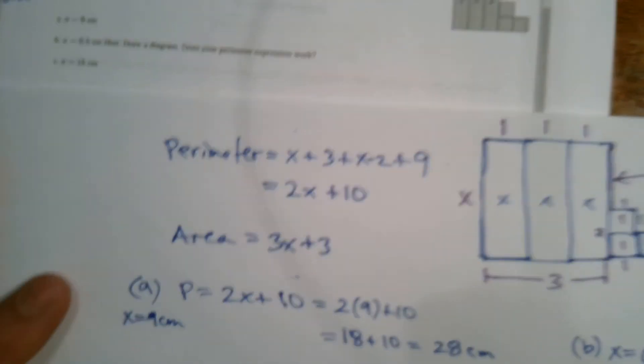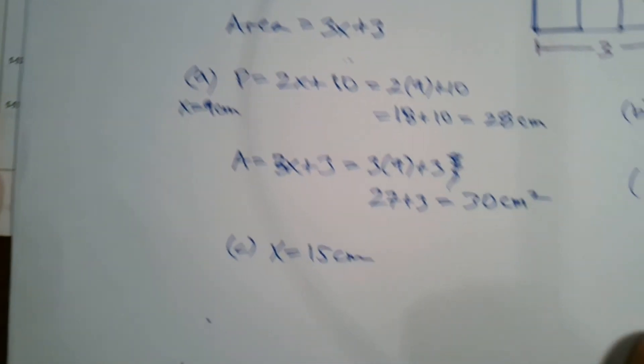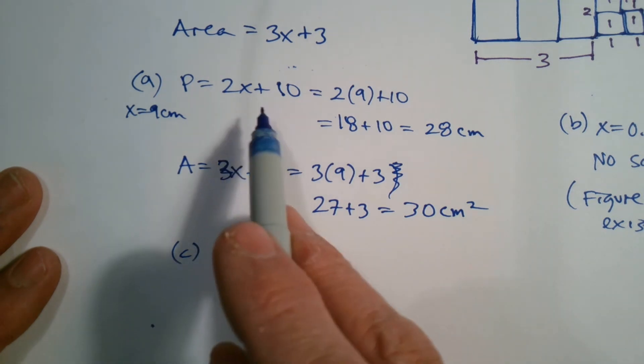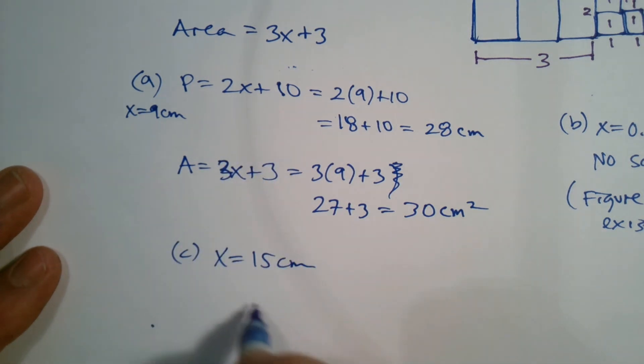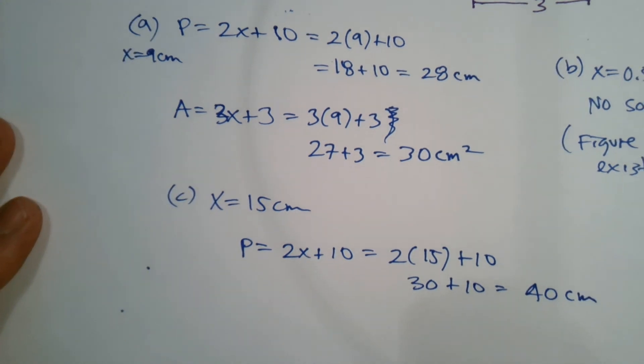So then C. Let's do C. Let's think about C. C says X is equal to 15 centimeters. So C, X equals 15 centimeters. So again, I'm going to plug in 15 into my two expressions. So for my perimeter, 2X plus 10, I'm going to say it's 2 times 15 plus 10, which gives me 30 plus 10, which is 40 centimeters. All right.